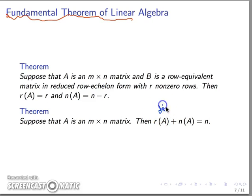What we're saying here is that the dimension of the column space of the matrix A and the dimension of the null space of this matrix A, both of these dimensions add up to the number of columns the matrix has.